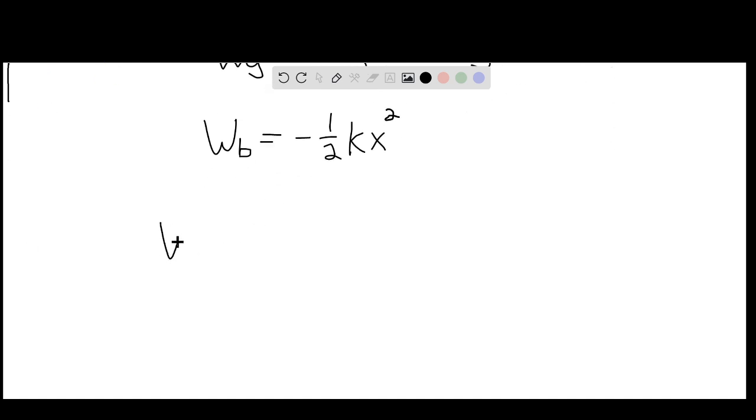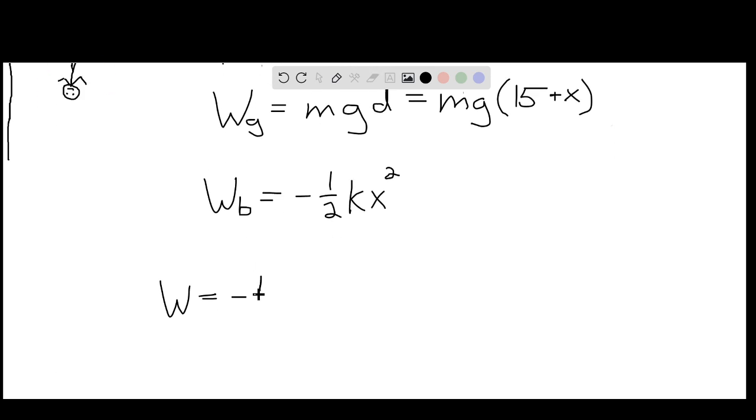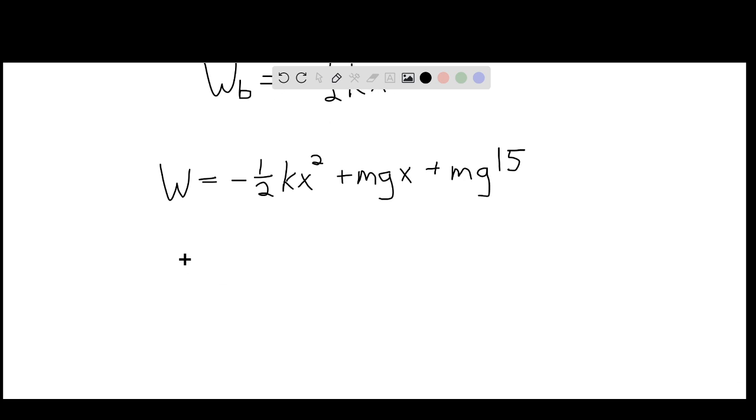So the total work done is going to be the sum of these two. Plugging in the given values for the spring constant, the mass of the man, and the acceleration of gravity...